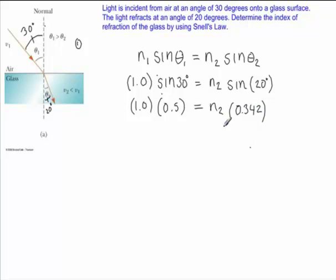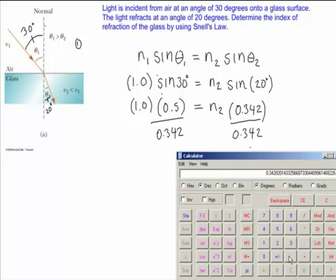So to solve for the index of refraction, I can divide both sides by 0.342. And so the index of refraction would be 0.5 divided by 0.342. And that's 1.46.